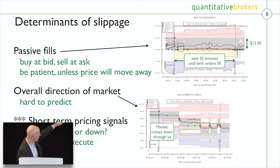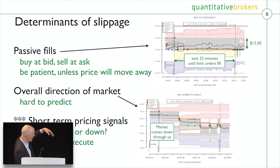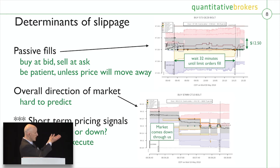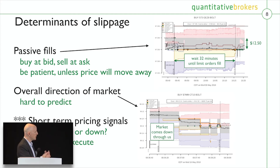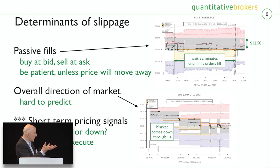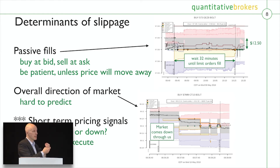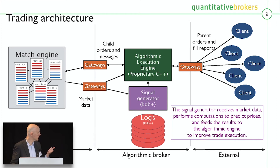One of the biggest determinants overall is whether the market comes toward you or away. We can't control that — you can see we're a buyer and the price comes down through us, we get filled, we look like heroes. There's a large randomness in how we do, but what we try to do is tweak the randomness one way or the other. What I want to emphasize is very short-term signals — do we think over the next couple of minutes the price is likely to go up or go down, and should we try to execute right now in a hurry? Those are the biggest things we can do that make a difference.